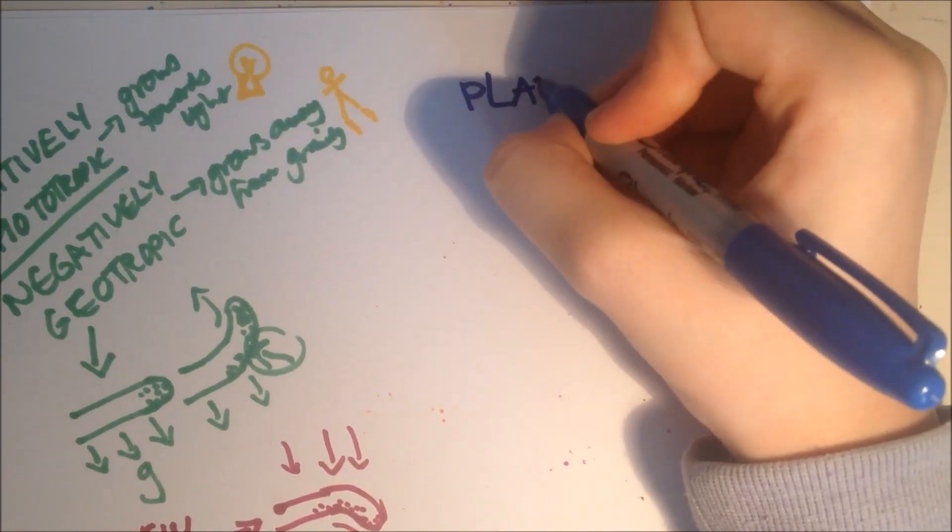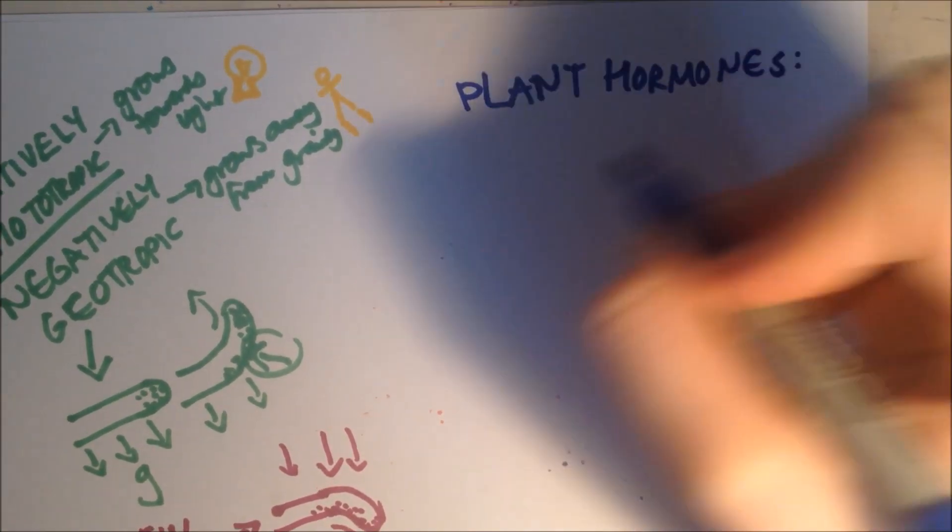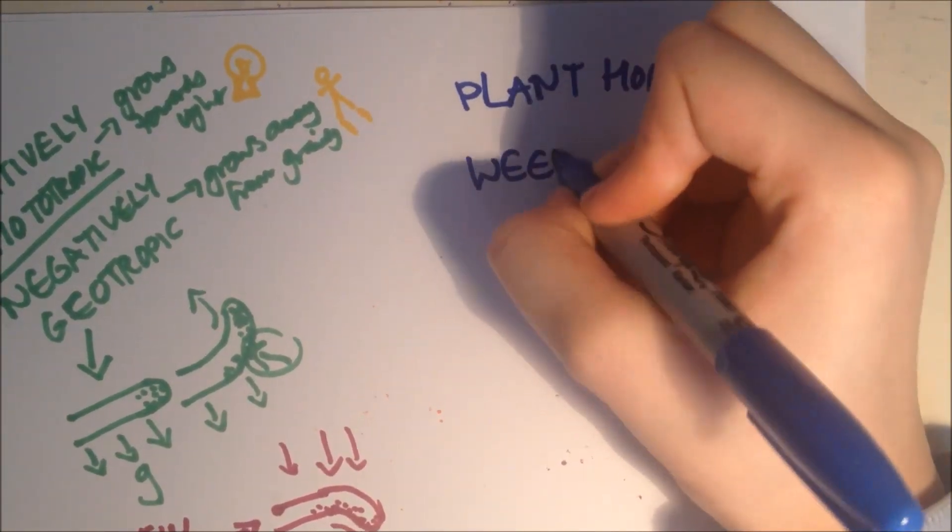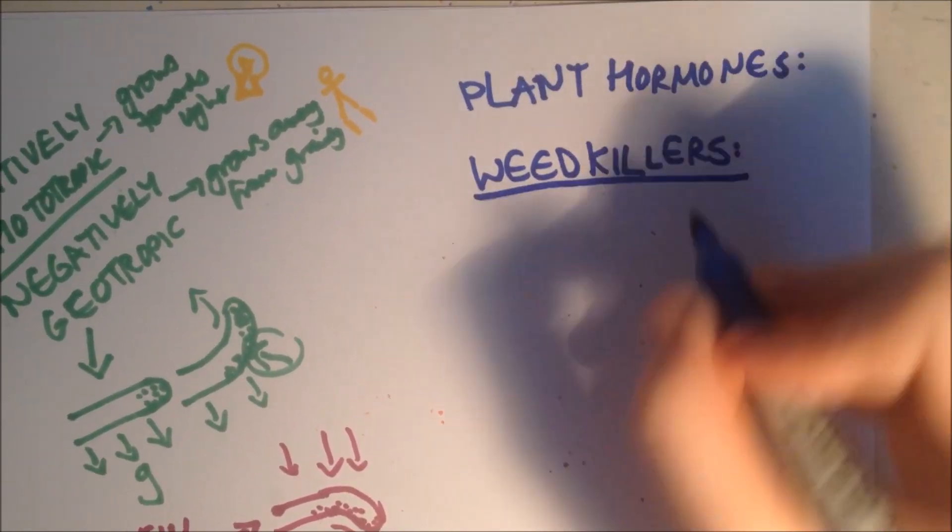Now we're looking at the commercial use of plant hormones. First thing they can do is they can be used as weed killers. They're very selective, so they only affect the broadleaf plant, which is usually the weeds.